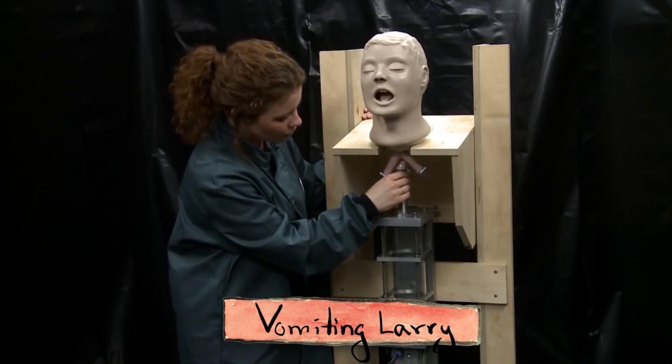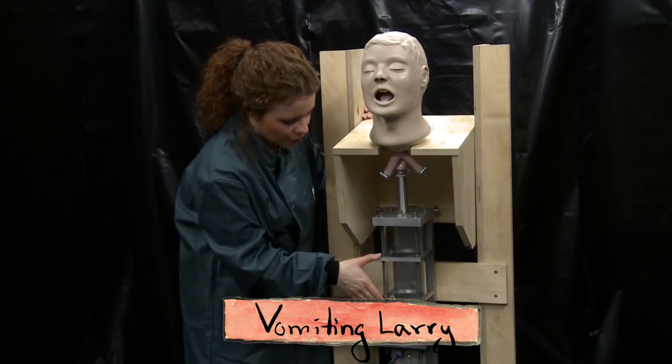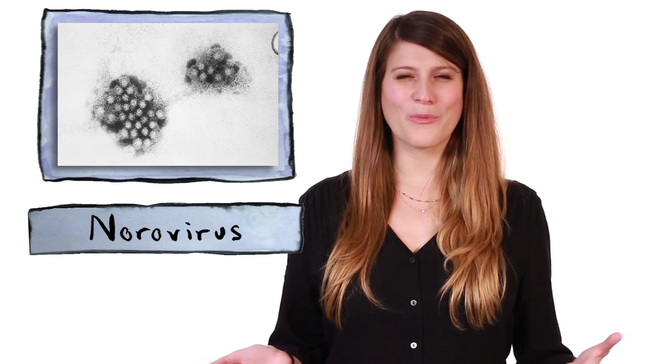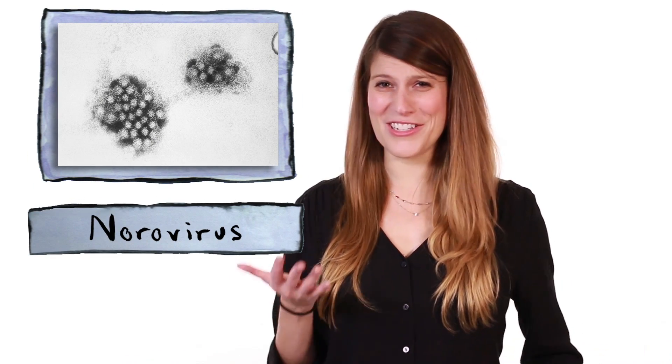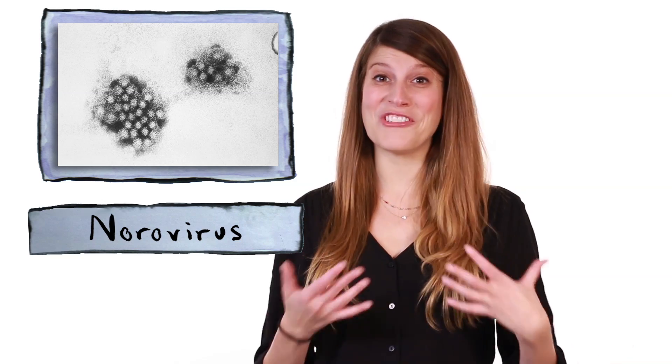And that's not all. To study what happens when someone's really sick, scientists in the United Kingdom built a robot called Vomiting Larry, who's basically just a head and a stomach. The researchers were studying norovirus, which is a nasty bug that causes nausea, diarrhea, and projectile vomiting.